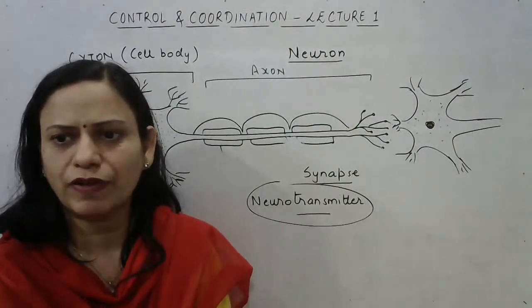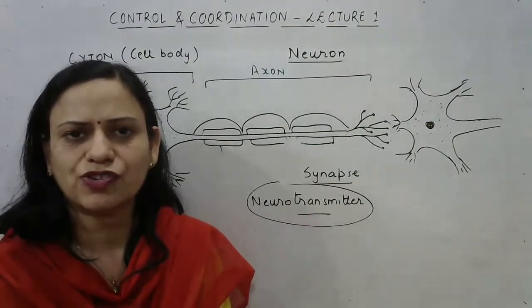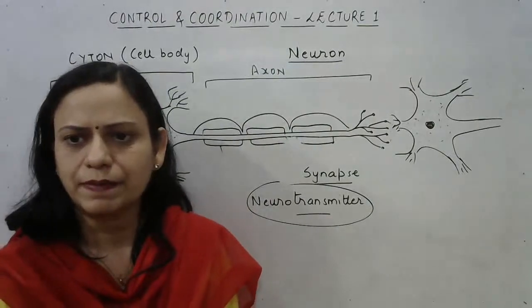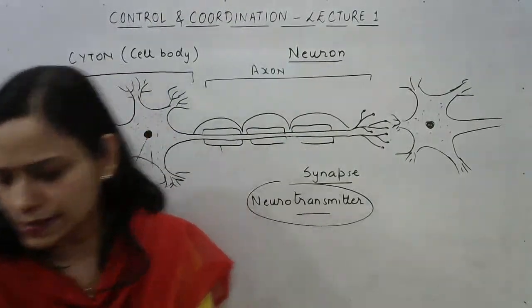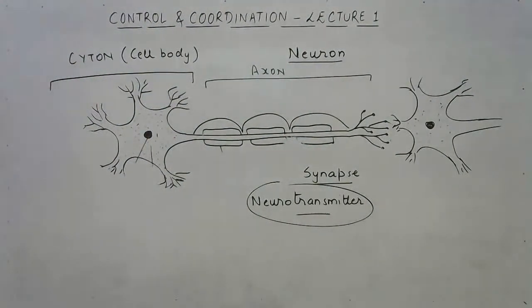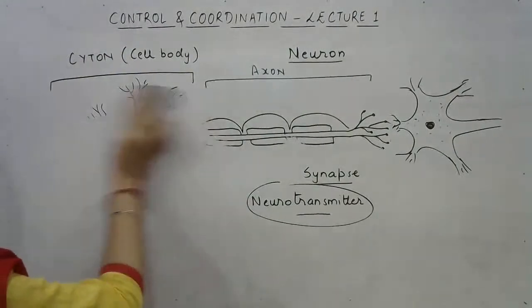A synapse is a microscopic gap between the nerve endings of one neuron and the dendrites of the next neuron. The neurotransmitter substance secreted at the nerve endings creates a stimulus in the next neuron, helping transmit the nerve impulse to the central nervous system.